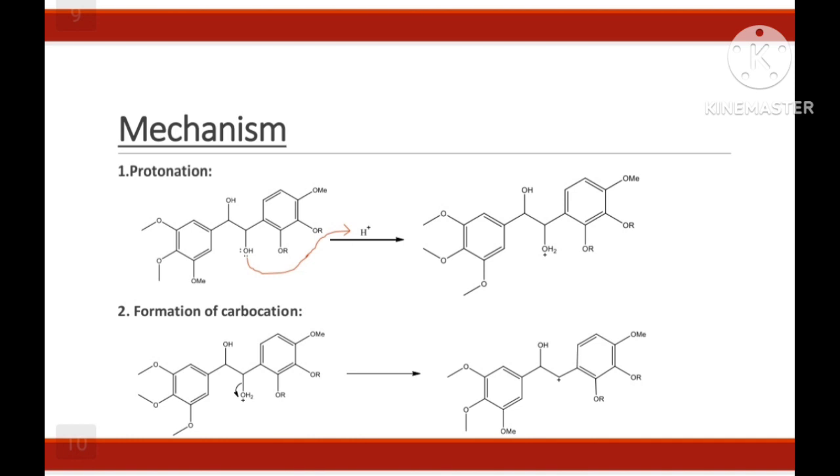Next is its mechanism. First step is protonation. Here, OH molecule is protonated and converted into OH2-positive molecule. Next step is formation of carbocation. Since an oxygen atom has a positive charge, so it is highly unstable and it has to leave the system. So, it will leave the system as water molecule and carbocation will form.